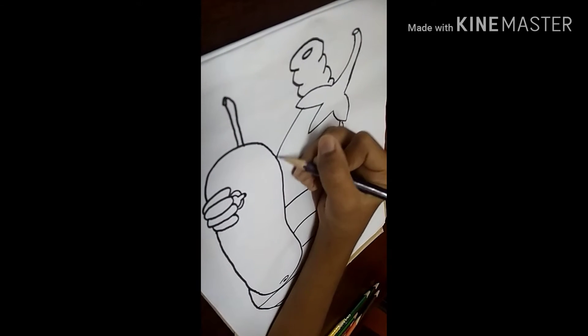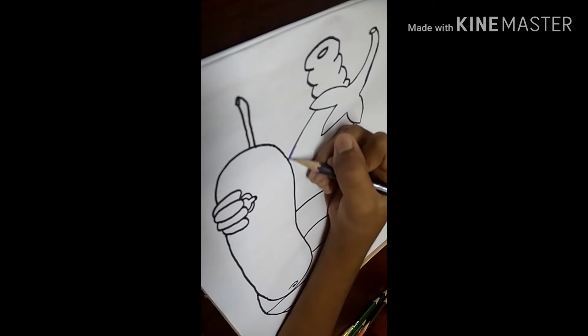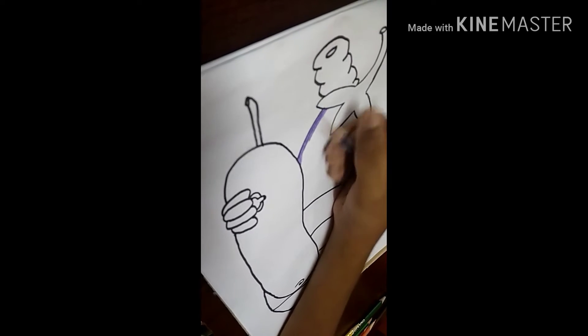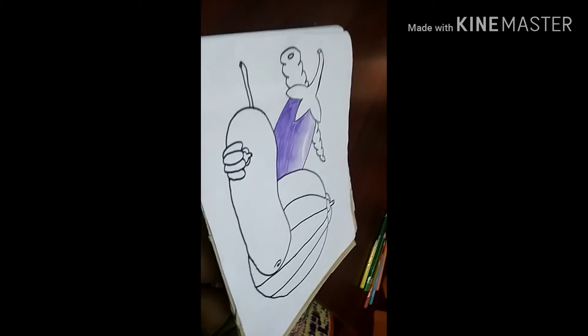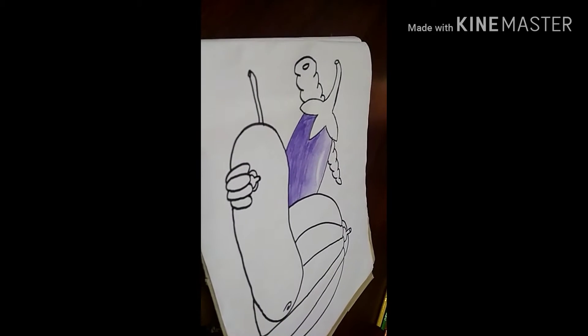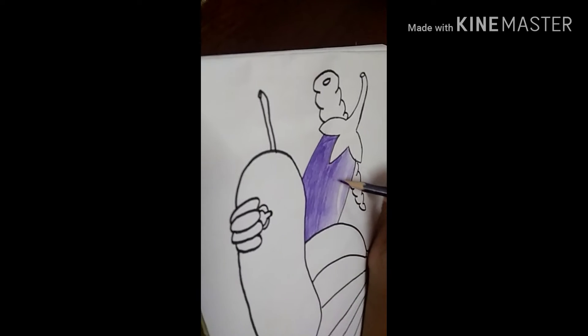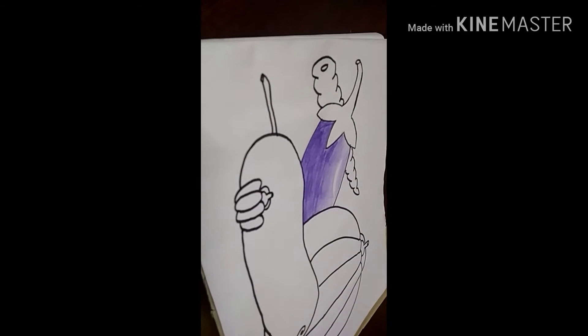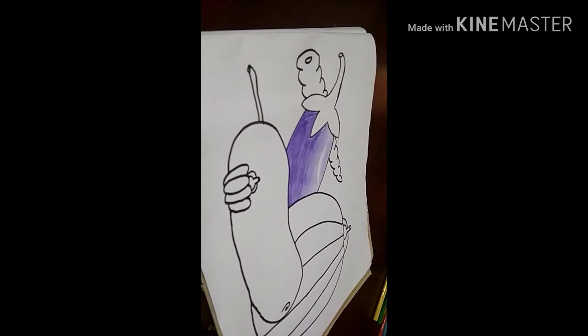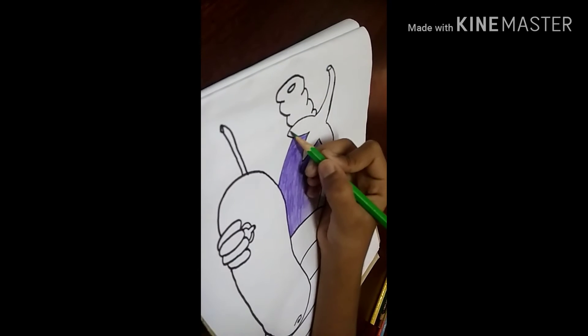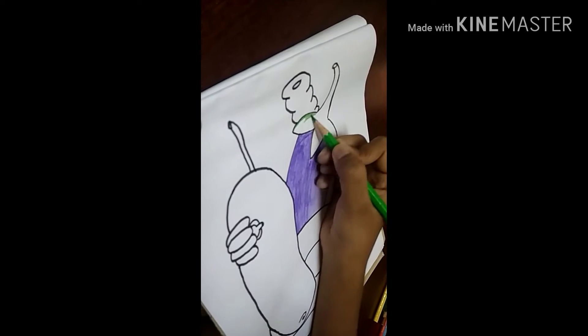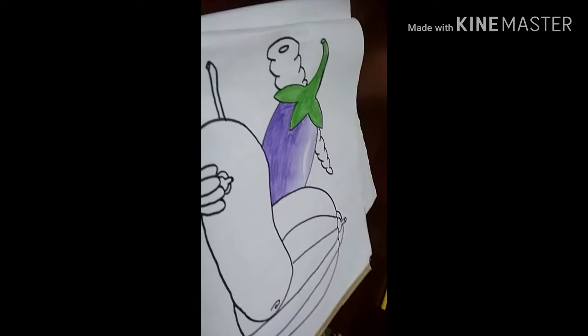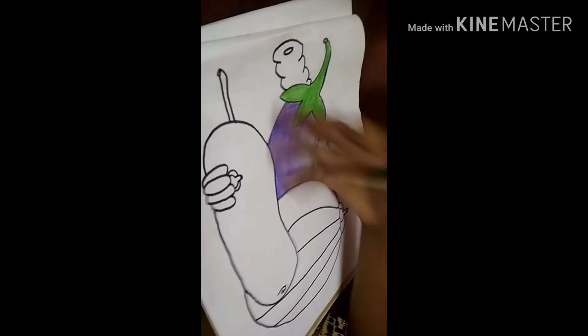Let's use purple color for brinjal. We should give dark to light shade from bottom to top and leave some white space for 3D effect. Use light green for the leaf and stem, then shade with dark green.